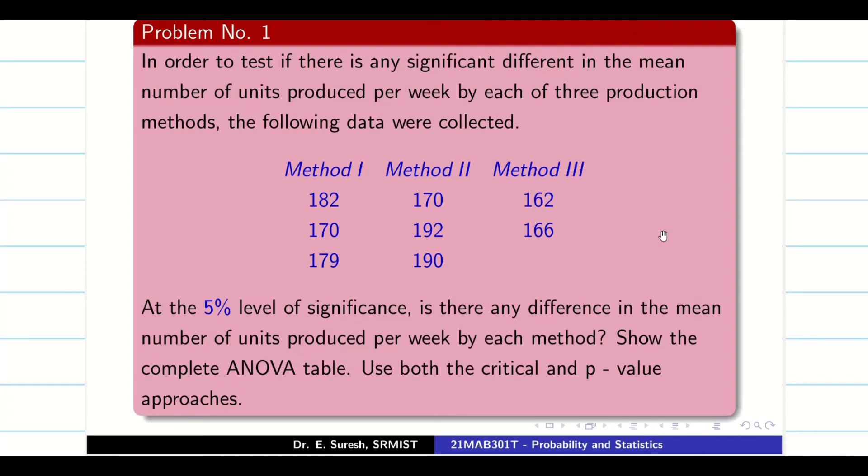Dear friends, welcome to this session. In today's session, we are going to solve problems on one-way ANOVA. Let us see the problem. Here three methods are given to us: Method 1, method 2, and method 3. At 5% level, is there any significant difference between mean number of units produced per week? Show the complete ANOVA table.